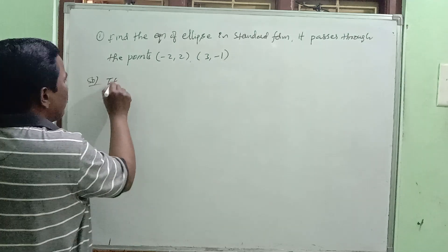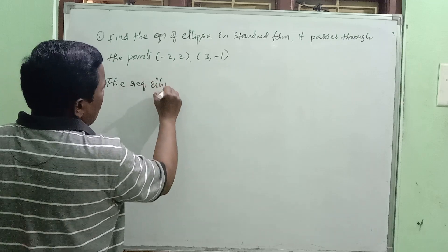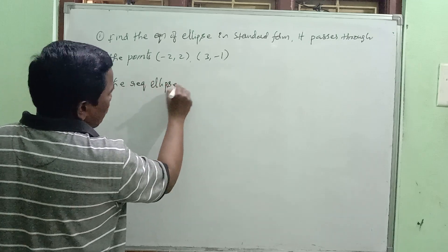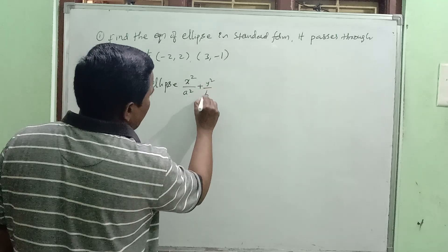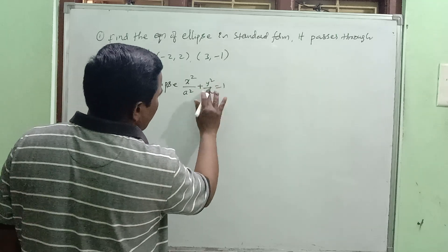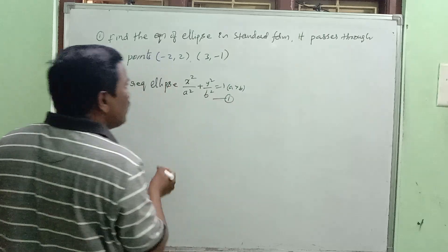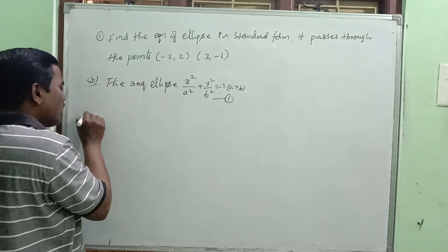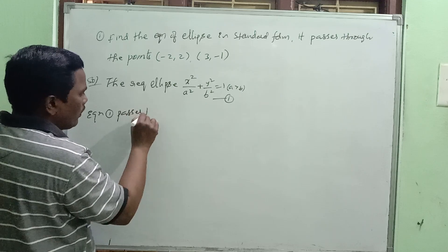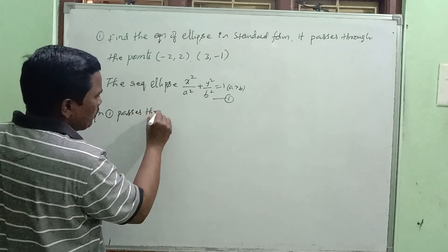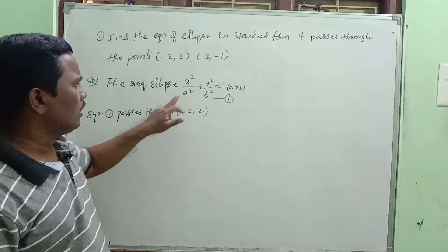The required ellipse in standard form is called x squared by a squared plus y squared by b squared equal to one, where a is greater than b. This is equation one. Equation one passes through the first point minus two comma two.